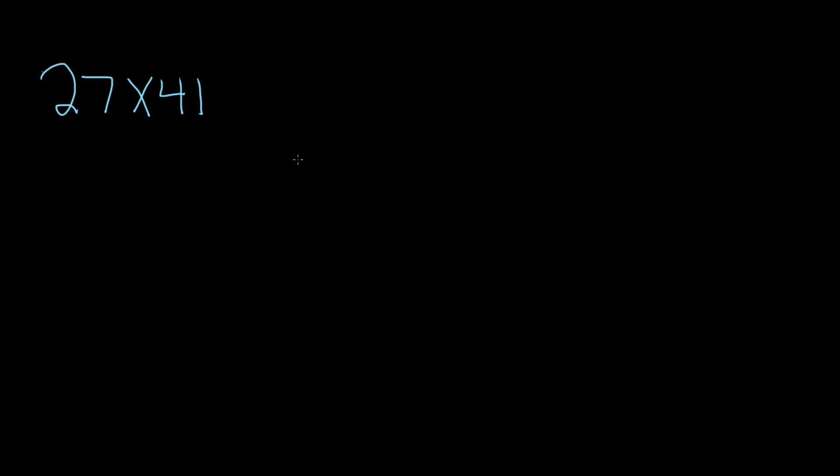Okay, let's multiply 27 by 41. The first step is you write one of the numbers down. It doesn't matter which one you write, as long as the one with the most digits is on top.